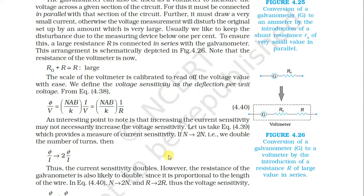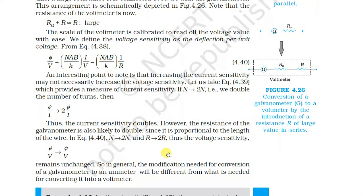If the number of turns is doubled to 2N, the current sensitivity doubles: φ/i becomes 2·(NAB/k). However, the resistance of the galvanometer also doubles to 2R since it is proportional to the length of wire. Thus the voltage sensitivity φ/v = NAB/(k·R) remains unchanged. In general, the modification needed to convert a galvanometer to an ammeter is different from what is needed to convert it to a voltmeter.